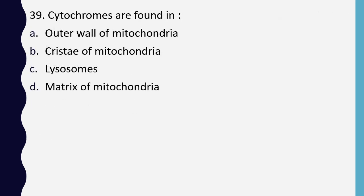Question 39. Cytochromes are found in: outer wall of the mitochondria, cristae of the mitochondria, lysosomes, or matrix of mitochondria. Correct answer is option B: cristae of the mitochondria.